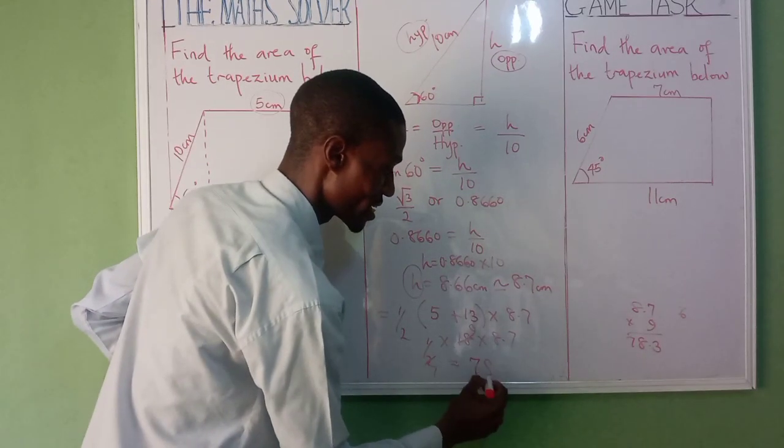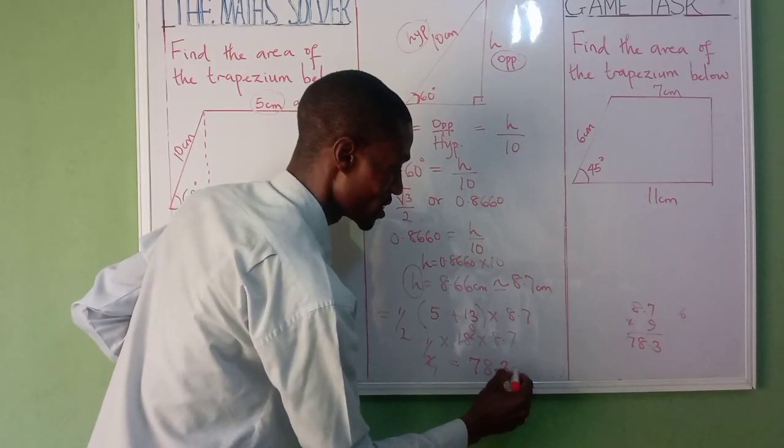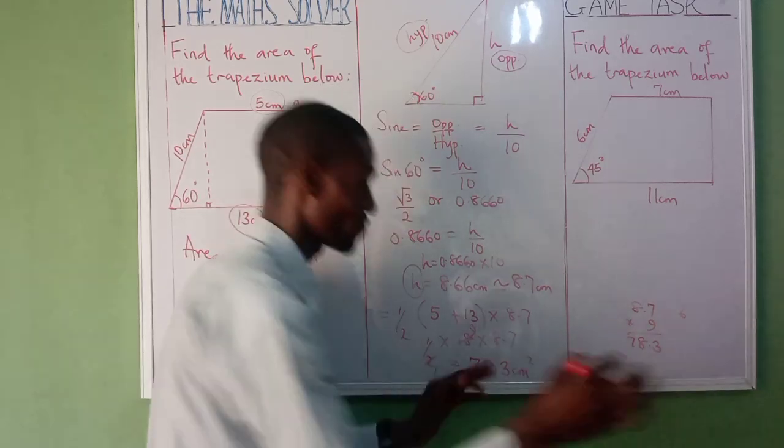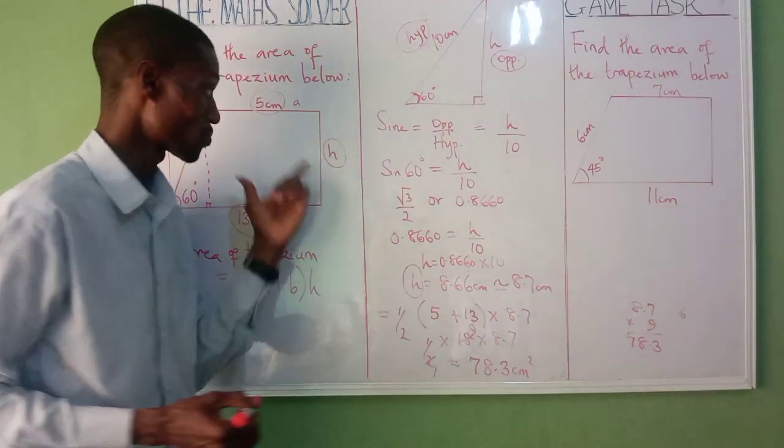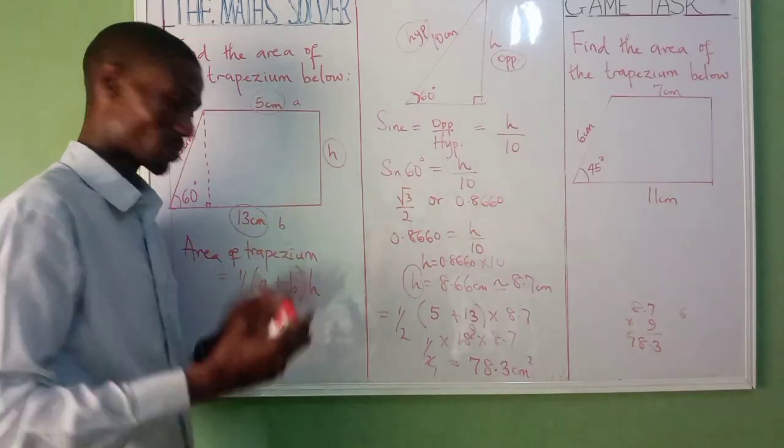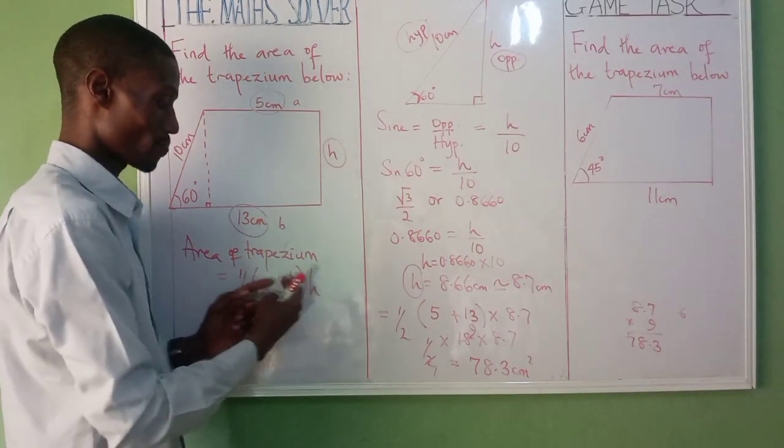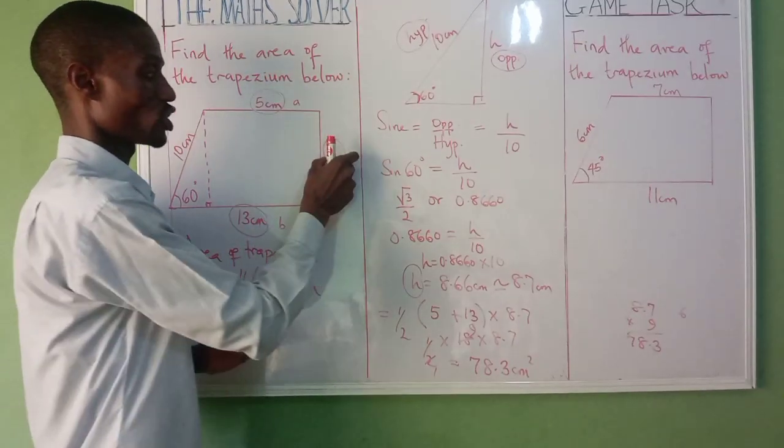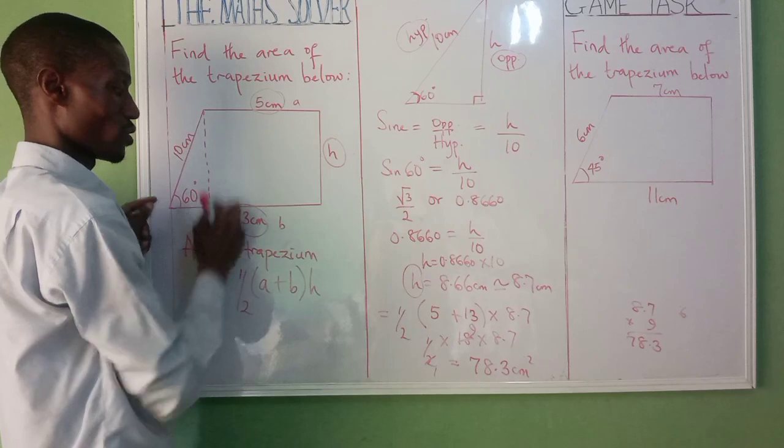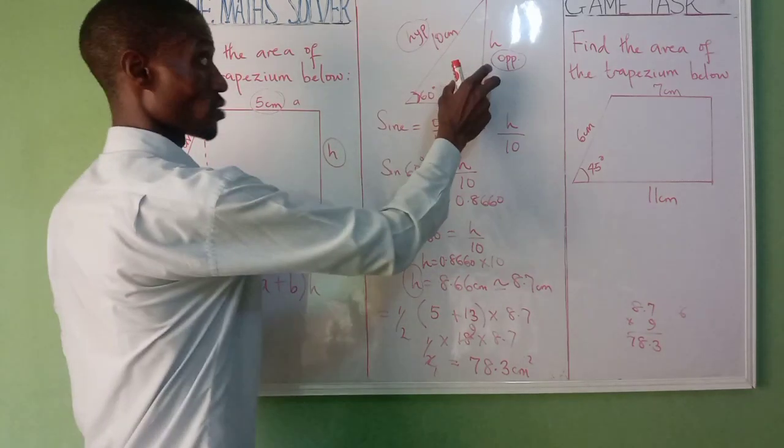Don't forget, starting from where we started from, your area of trapezium is 1 over 2 into bracket (a plus b) into bracket h. Our a is given, b is given, but h is not given, so you have to trace it out from this shape. You trace it out, you bring it out.